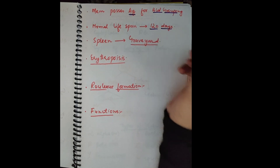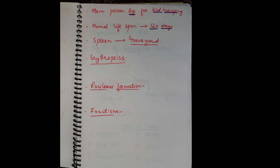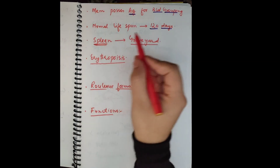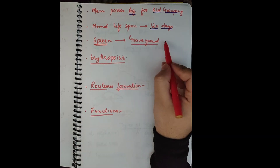The normal lifespan of an RBC is 120 days. After formation, an RBC is degraded after 120 days because it does not possess a nucleus or ribosomes and cannot repair itself. Due to repeated movement through thin capillaries, the membrane gets damaged and becomes fragile. When the membrane becomes very fragile, the RBCs are destroyed — most commonly within the spleen, which contains the smallest capillaries in the body.